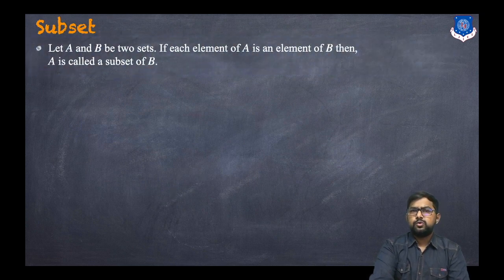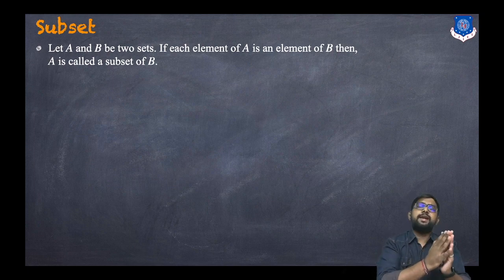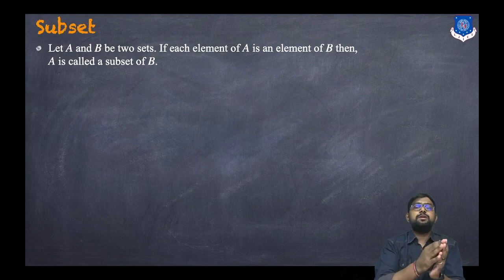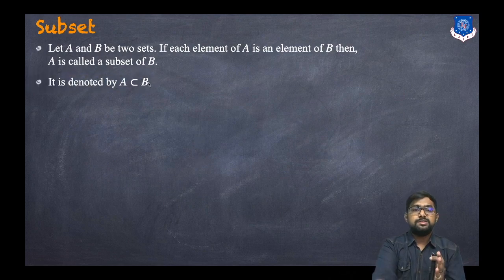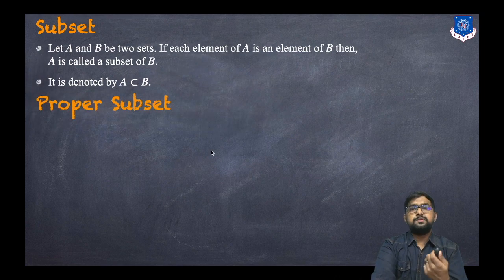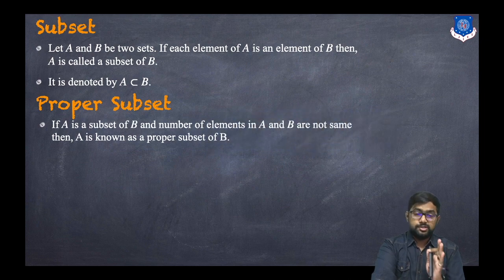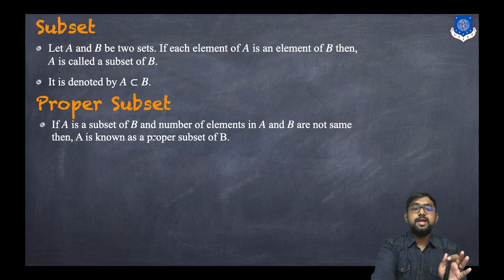Let's understand what a subset is. Let A and B be two sets. If each element of A is also an element of B, then A is called a subset of B, denoted A ⊆ B. A proper subset requires that A ⊆ B and the number of elements in A and B are not the same.